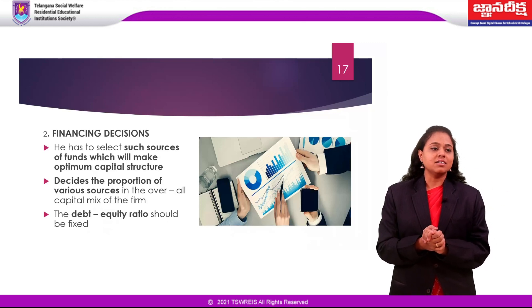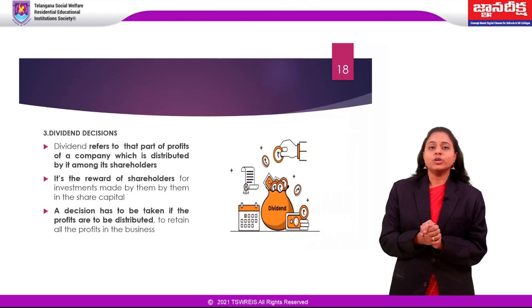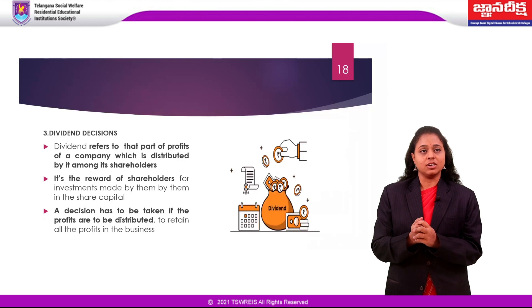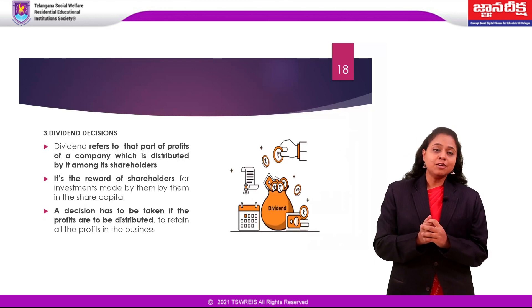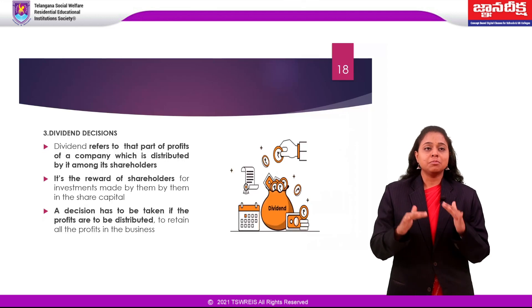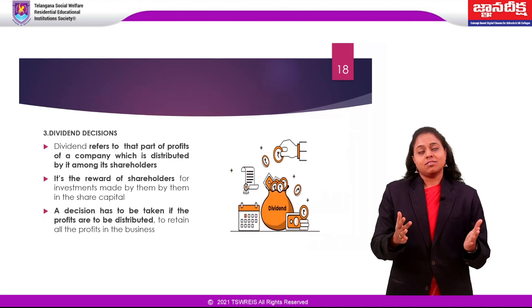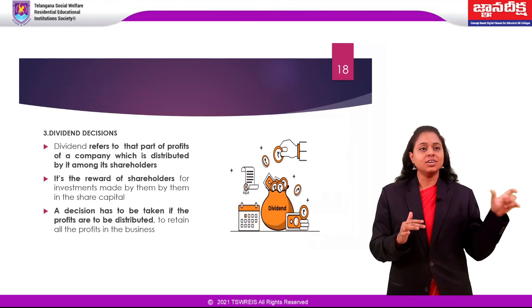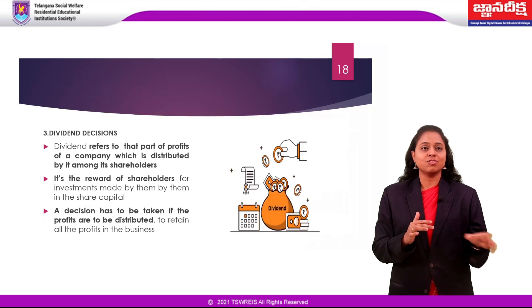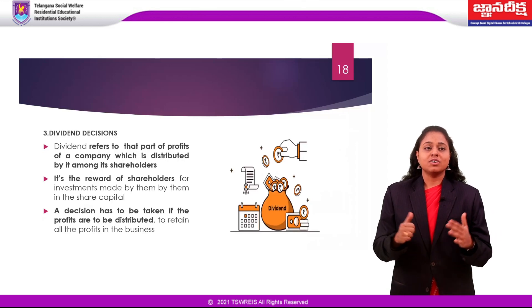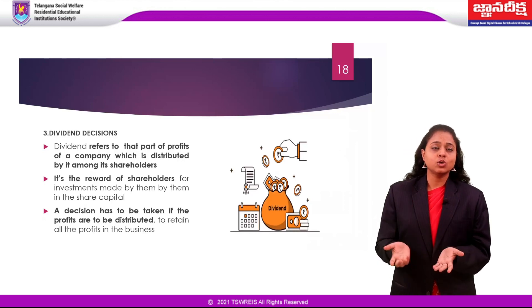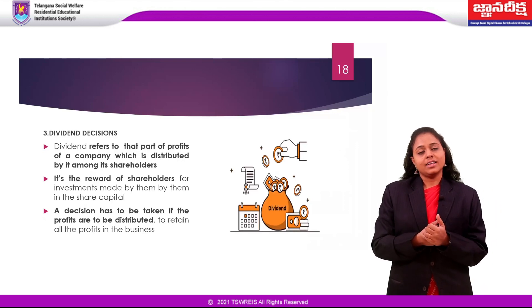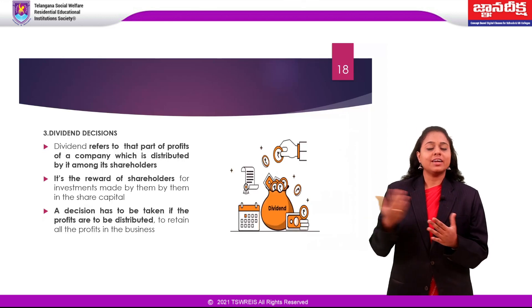The third decision is the dividend decision. Dividends play a very important role in keeping shareholders in the organization. Dividends refer to the part of profits of a company distributed among shareholders. Just as an employee waits for salary at the end of the month, shareholders wait for dividends — they are a reward for the shareholders' investments. A decision must be taken whether profits are to be distributed to shareholders or retained by the organization, and the finance manager decides when to declare dividends.